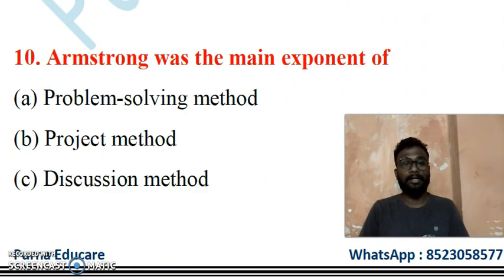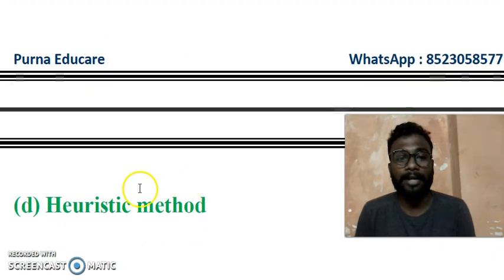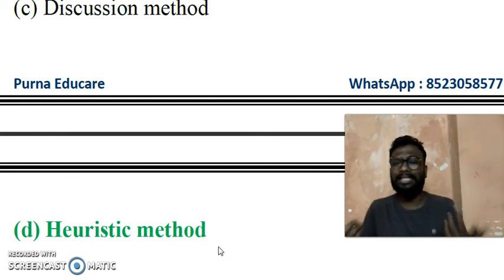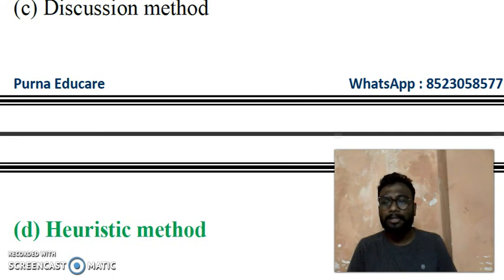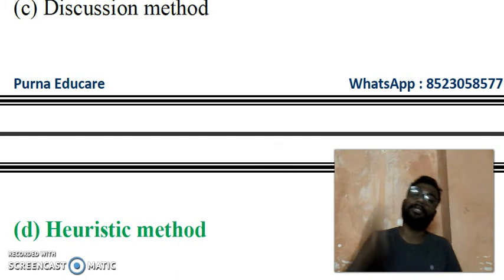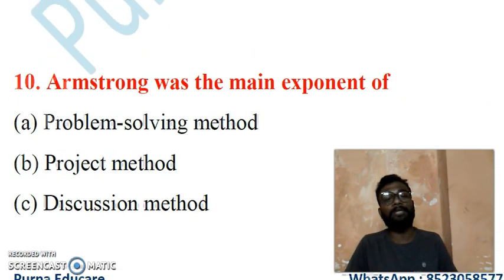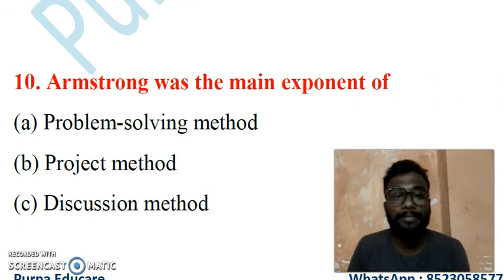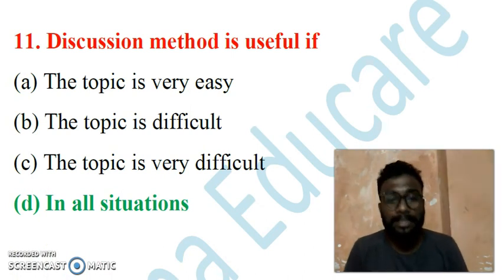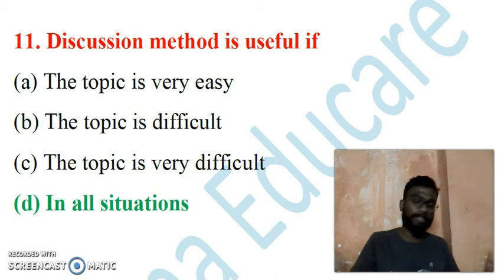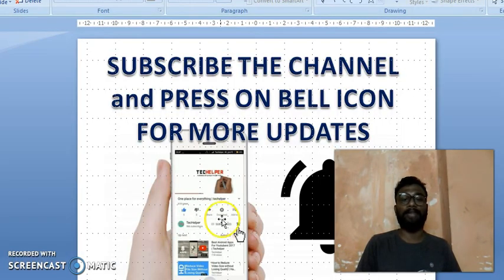Question 10: Armstrong was the main exponent of which method? Armstrong was the main exponent of the heuristic method. Heuristic method is question-oriented, mainly focusing on how, why, when, and what. Question 11: Discussion method is useful in all situations — whether the topic is easy, difficult, or very difficult, the discussion method is really helpful.